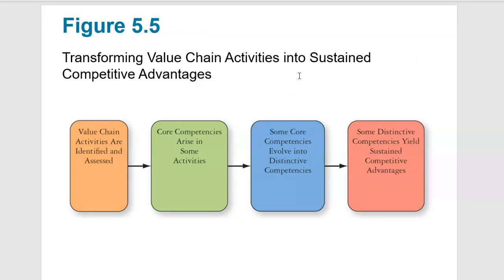Transforming value chain activities to sustain competitive advantage means identifying what you're doing well and turning them into core competencies. Apple is great at having a great distribution network for their phones. Coke and Pepsi have strong franchises to make their sodas around the world. Evolving these core competencies into distinctive competencies — Coke and Pepsi are so good at buying shelf space in supermarkets that very few other brands can get new sodas onto the market. They control so much of the vending machines, supermarket shelves, and pharmacy shelves that they keep a lot of brands from even reaching consumers' hands. These eventually yield a sustained competitive advantage — Disney is known for producing great animation and family films, and consumers just think of them as the high quality product in that market.